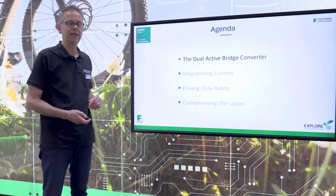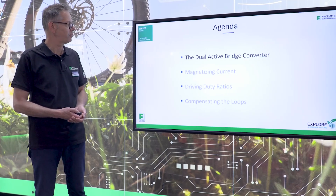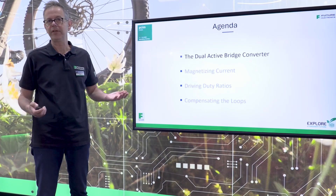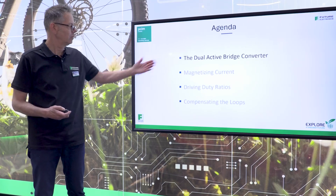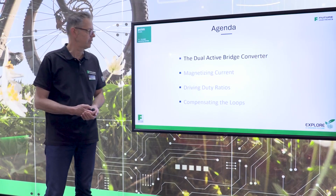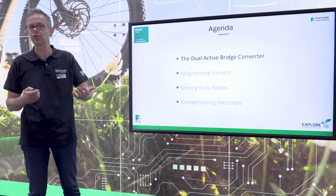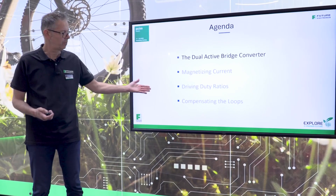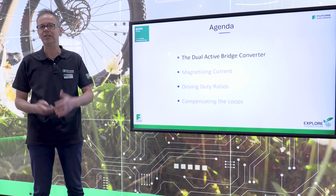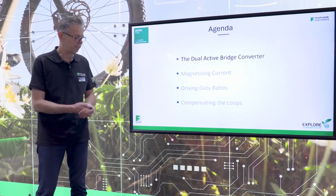We'll go briefly through a quick description of the dual active bridge converter, abbreviated DAB. Then we go through the problem of the magnetizing current, how to drive duty ratios for loop control, and then compensating the loops, which is also an important exercise when you talk about switching power supplies.